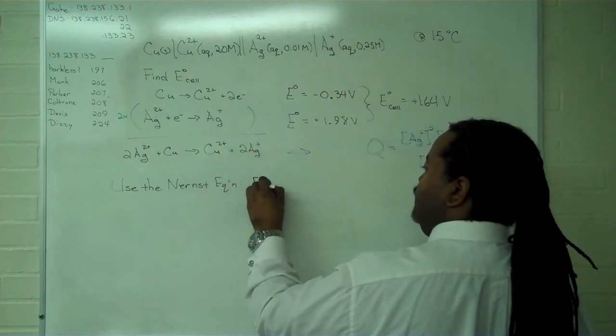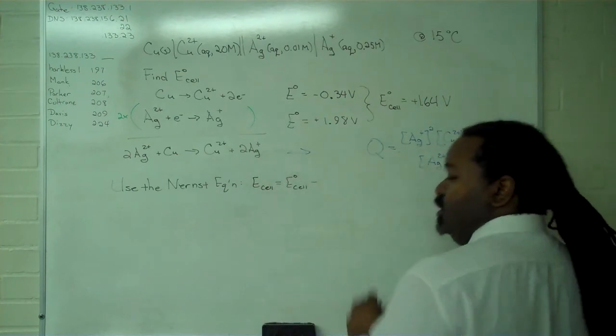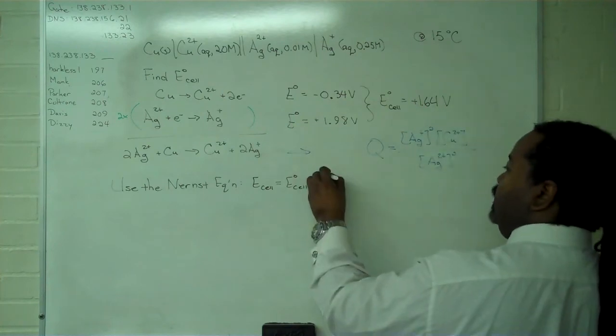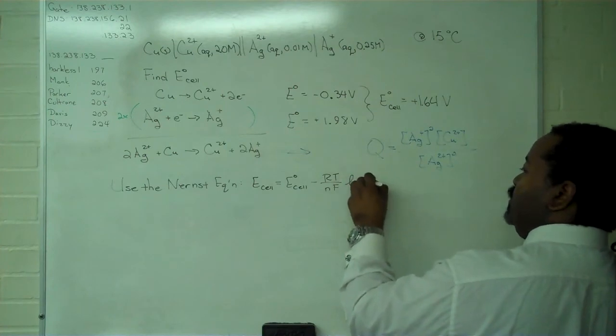Namely, that E-cell non-standard is the standard cell potential, minus RT over NF times ln of Q.